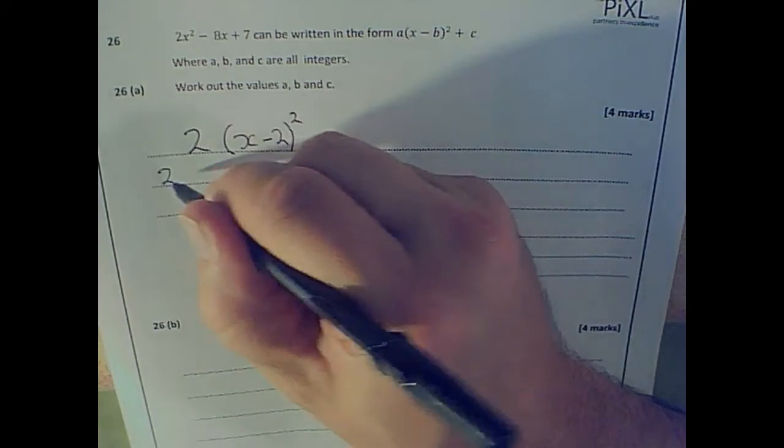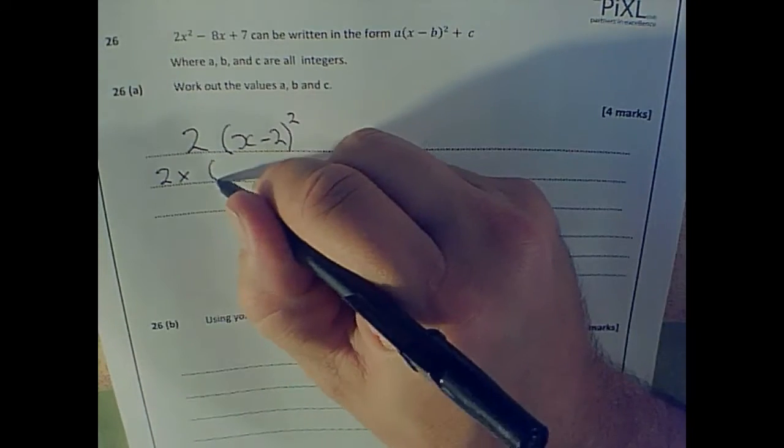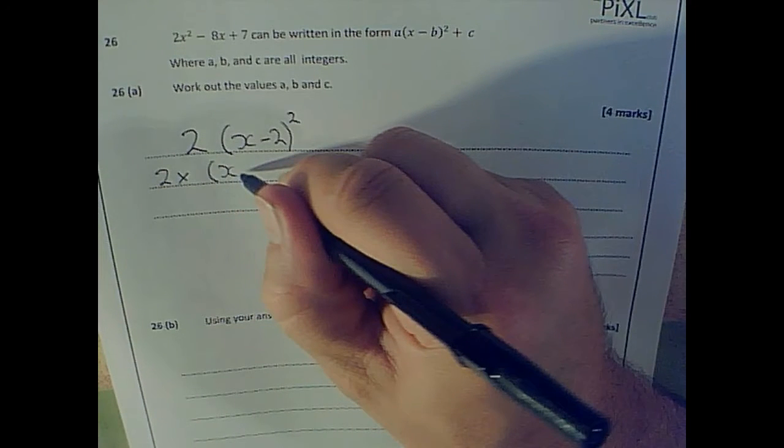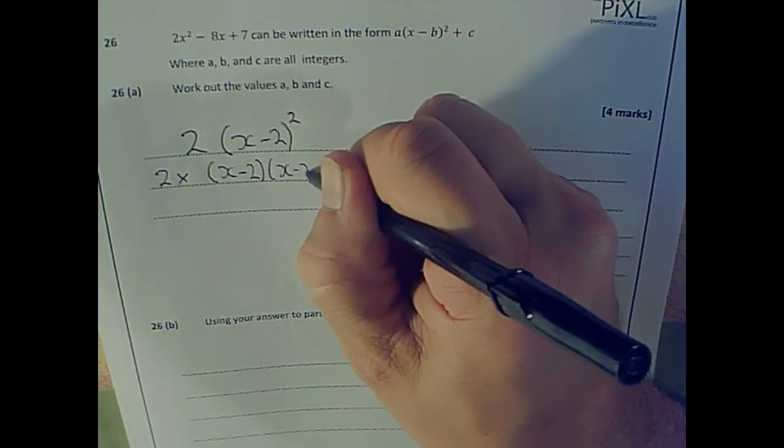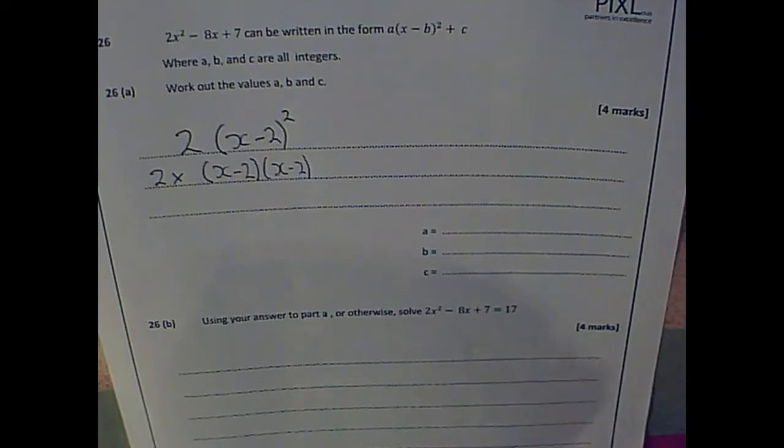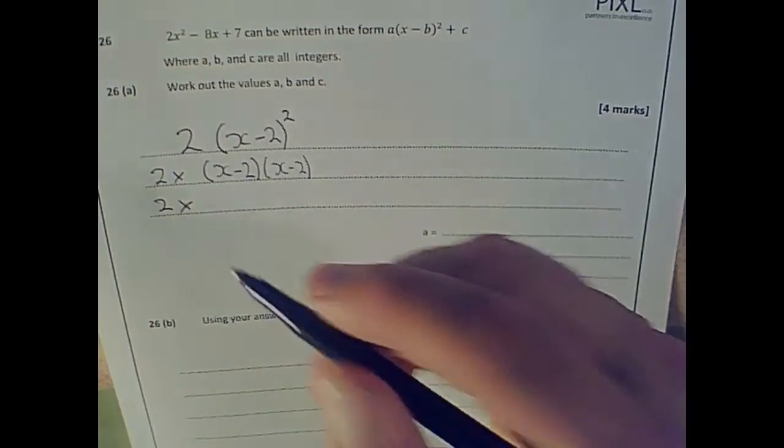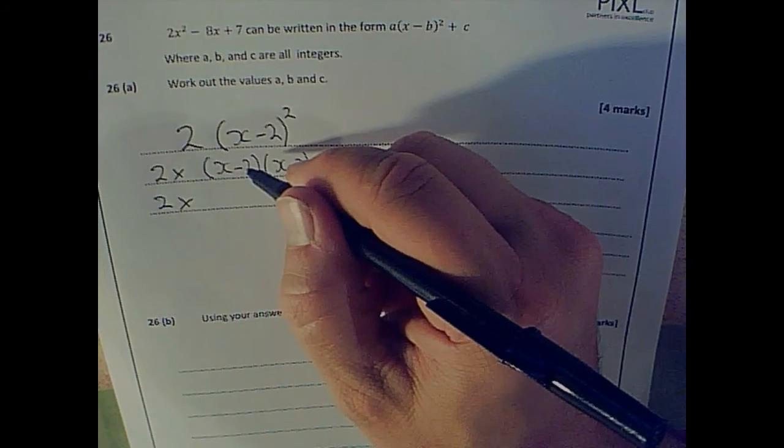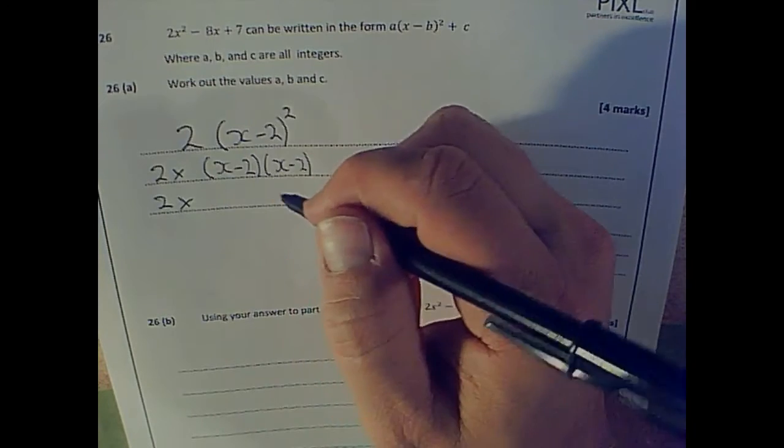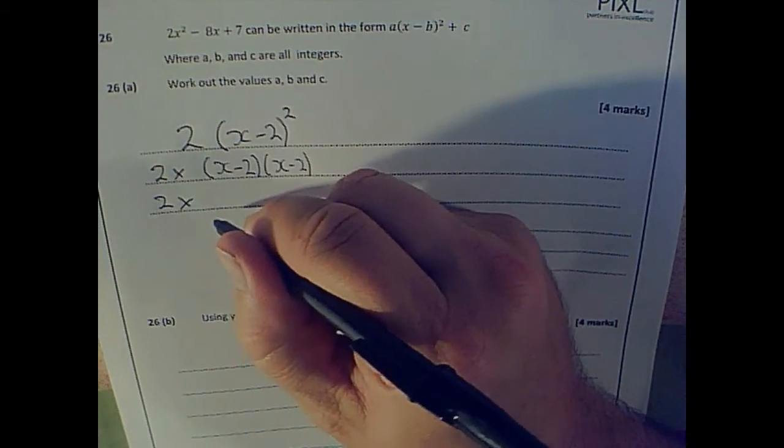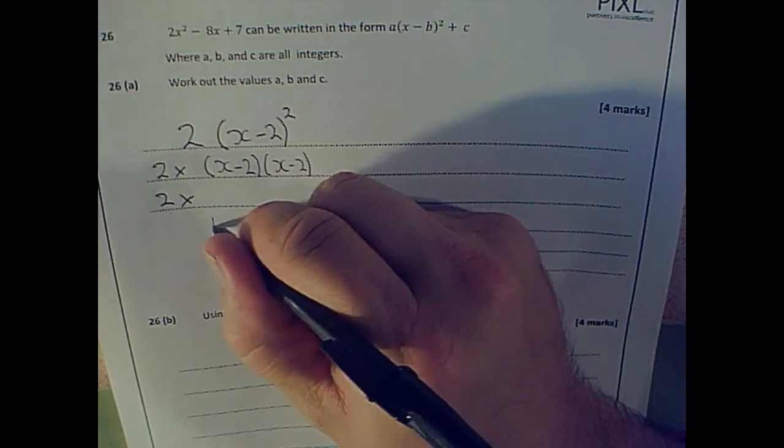So what this is, is 2 times by x minus 2, x minus 2. That's what I've got here. So this is the same as 2 times by, and I'm going to do this FOIL method or brackets method, or grid method, whatever I choose. But I'm going to do FOIL method.